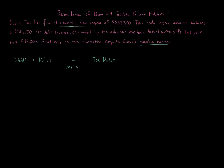In this question, we have the book income presented. Whenever you're doing a taxable income question where you're given book income, your starting point is always to take book income — $569,300. With these reconciliation problems, you start with book income as step one, then adjust for the amounts given in the problem, since the question says to compute taxable income based only on this information.